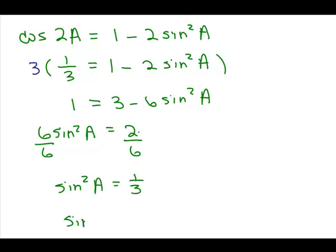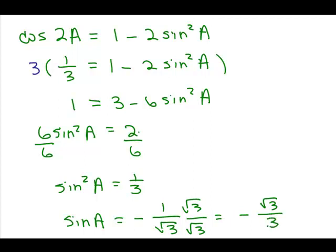Dividing both sides by 6, sine squared a equals 1/3. Taking the square root — and because a is in quadrant 3 we take the negative square root — we get 1 over the square root of 3, and multiplying by square root of 3 over square root of 3, the sine of a is negative square root of 3 over 3.